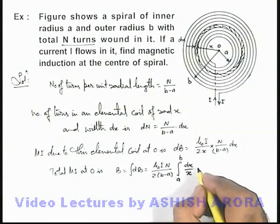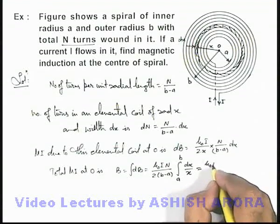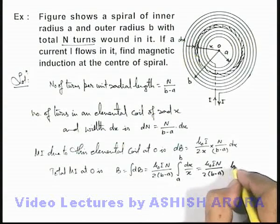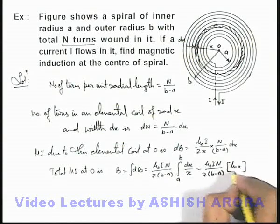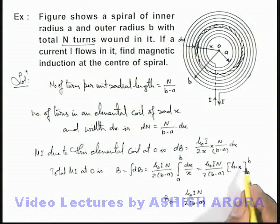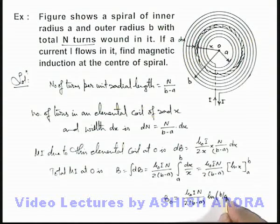So on integrating we are getting μ₀iN/(2(b-a)), and its integration is ln x, we apply limits from a to b. So directly the magnetic induction at o we are getting μ₀iN/(2(b-a)), this will be ln b minus ln a which can be written as ln(b/a). That will be the answer to this problem.